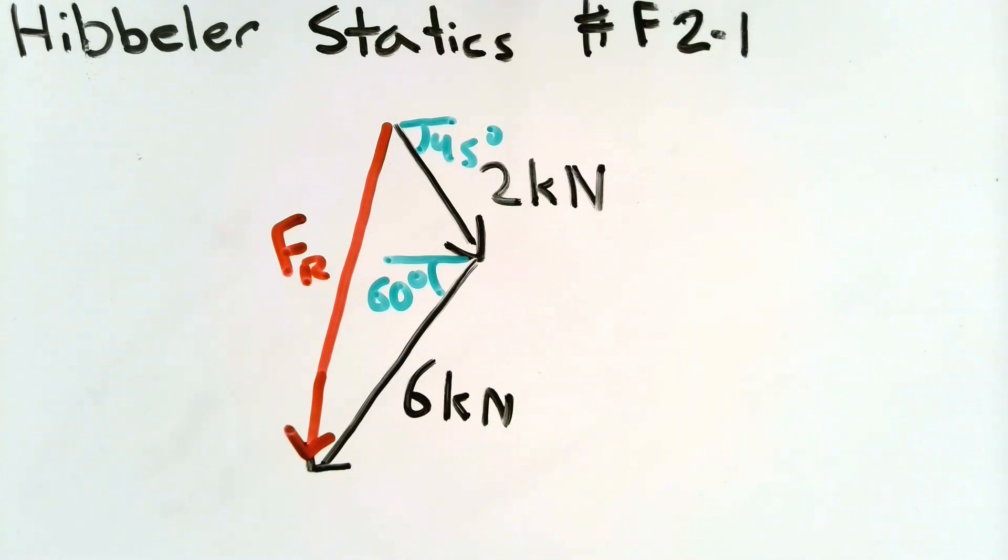The 2 kilonewton vector was angled at 45 degrees and the 6 kilonewton vector was angled at 60 degrees. The resultant vector is what you get when you connect the end or the start of the 2 kilonewton vector to the end of the 6 kilonewton vector. Now notice that it doesn't matter which vector you choose as your starting point your resultant vector will still look the same.